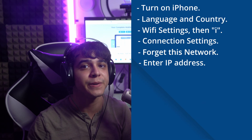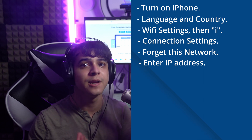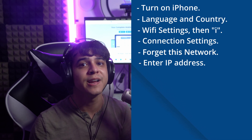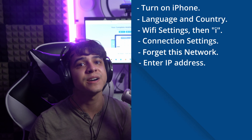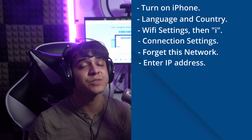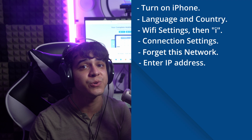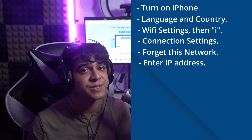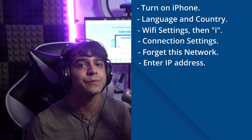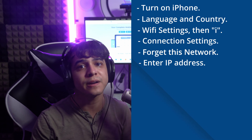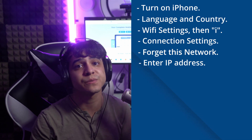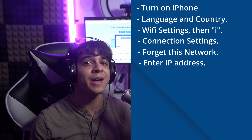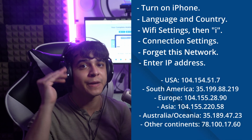Turn on your iPhone, then select your language and country and run through the provided menu. As you move into the Wi-Fi settings, connect to the respective Wi-Fi and click on the eye icon. Disconnect the Wi-Fi you connected to and proceed to the connection settings. Tap 'Forget This Network' to remove the Wi-Fi, then tap the eye icon and enter the DNS server IP address according to your region.